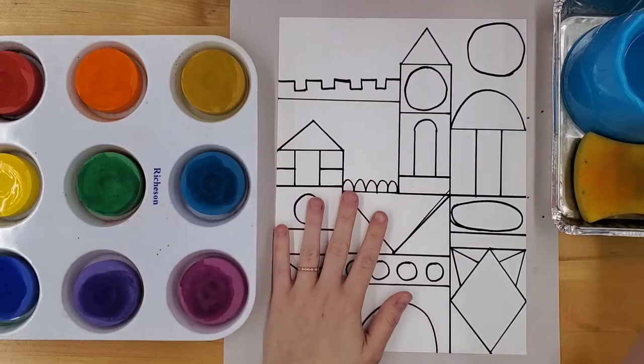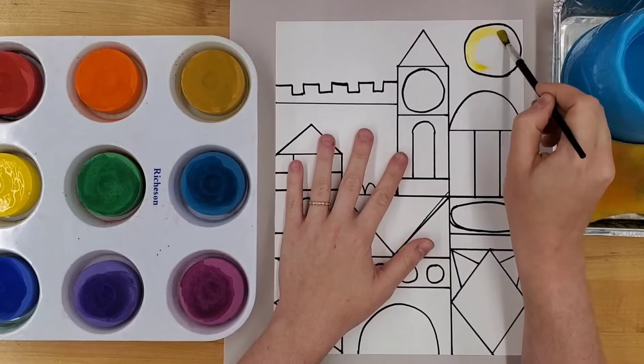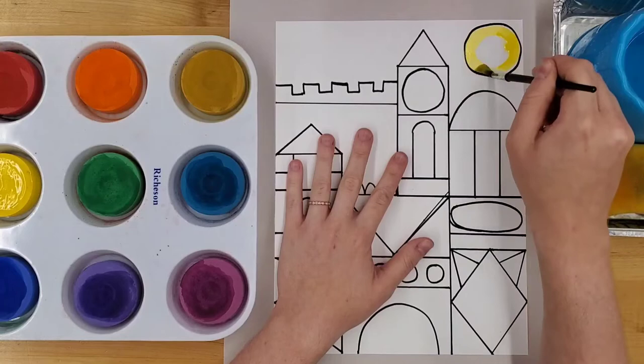I also suggest that you start with the light colors while you still have clean water. Just as if you were coloring the sections, start with the outline so you are super careful to not go past it. Then it's easy to fill in the middle.